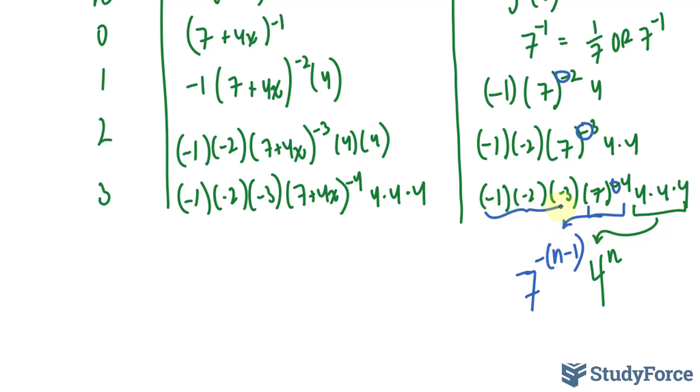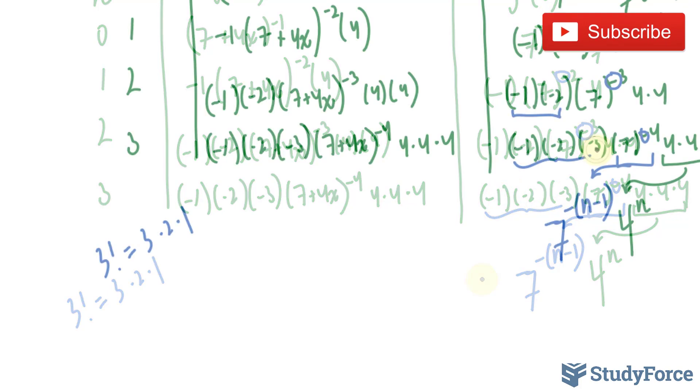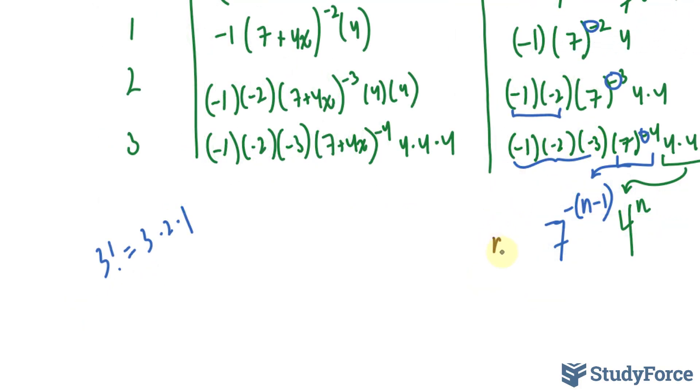Now, to account for these 3, that's by definition a factorial. Remember, if we have, let's say, 3 factorial, that's the same thing as saying 3 times 2 times 1. So at 3, we have 3 times 2 times 1. So I can write this out as n factorial.